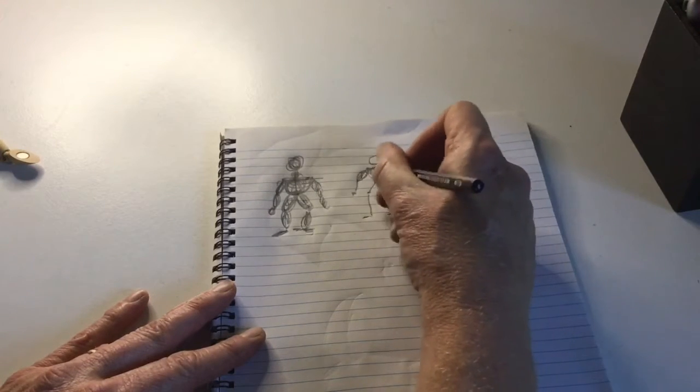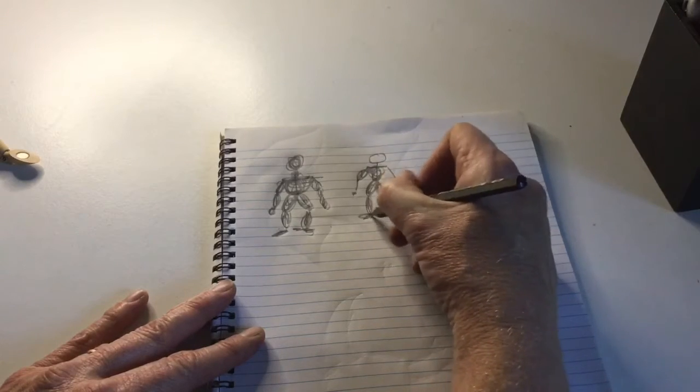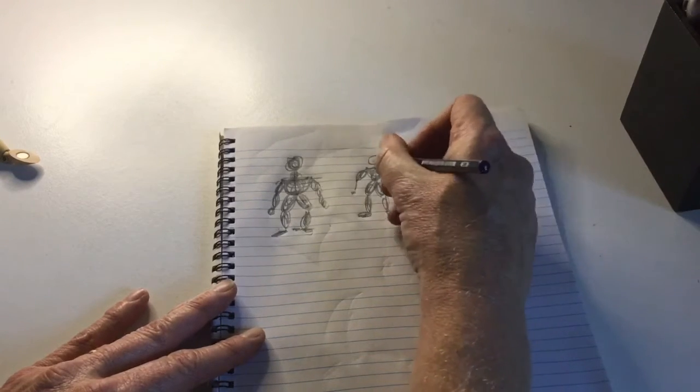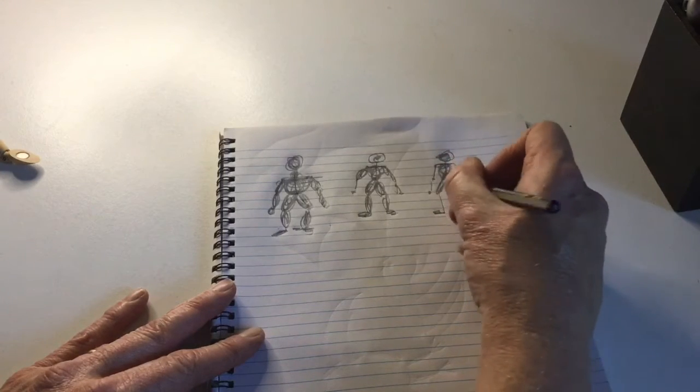Same for here. Scribble the chest. Scribble the thighs. The lower legs. And do that. There we go. One more. Scribble, scribble, scribble. There we go. We've got three people scribbling.